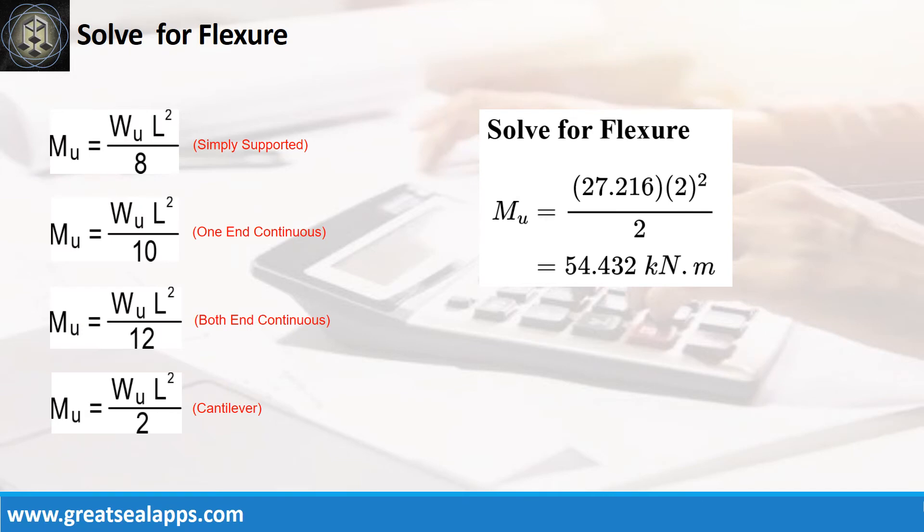Given factored load equals 27.216 kN per meter and L equals 2 meters, the maximum moment is 54.432 kN per meter.